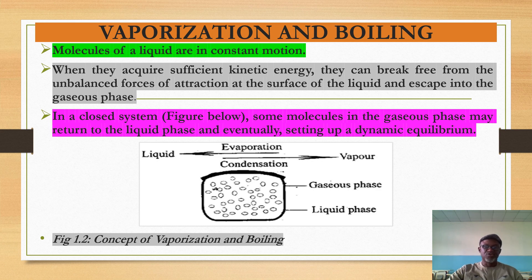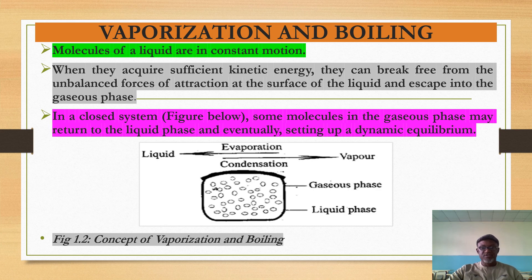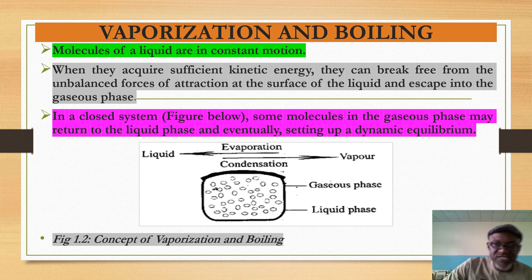The molecules near the heat source acquire more energy, become less dense, and move upward. Those in the cooler region are denser and come back down, acquire energy again, and move — creating eddy currents, a kind of bulk movement visible when boiling water. Some molecules escape into the gaseous phase, and at the surface of the liquid a particular pressure is set up, which we call vapor pressure.